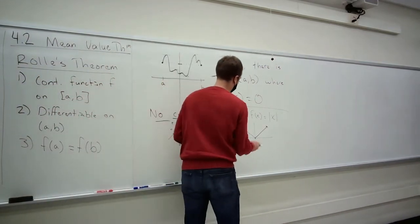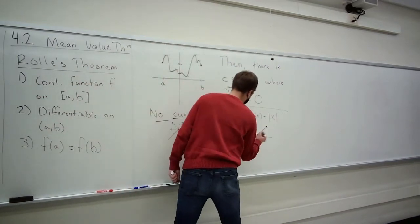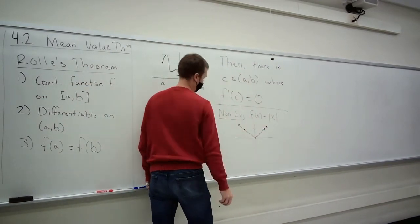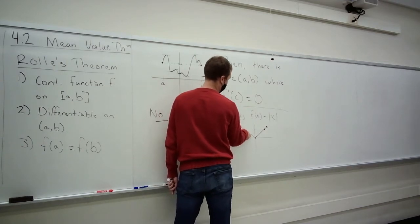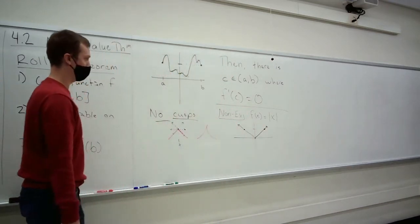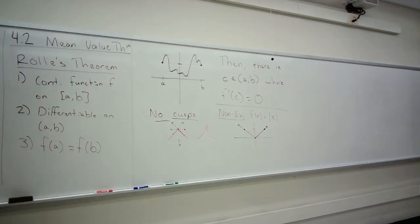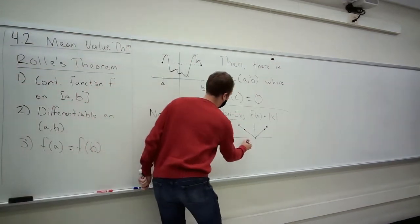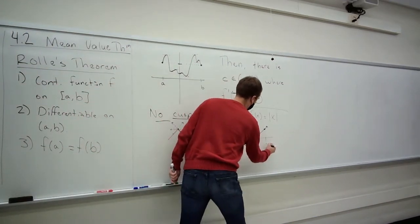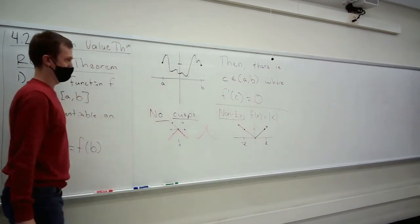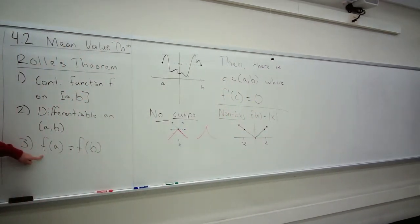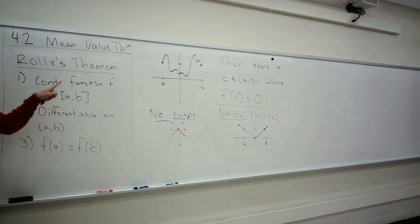So if we try to apply Rolle's theorem to the absolute value function, we pick some height, and it goes down for a while and then comes back up. But there's no point where the derivative is zero because it has a cusp — it's not differentiable everywhere in between the start and end. Here's our starting point: let's say negative 2. Here's our ending point: let's say 2. They both have the same height. It's definitely continuous from negative 2 to 2, but it's not differentiable because it's not differentiable at zero.